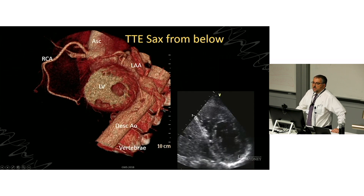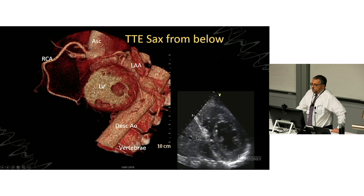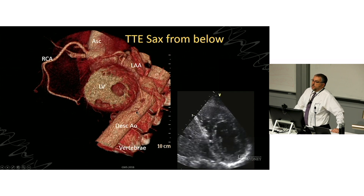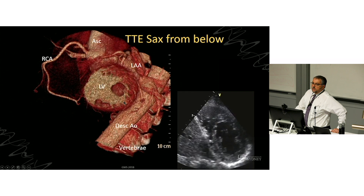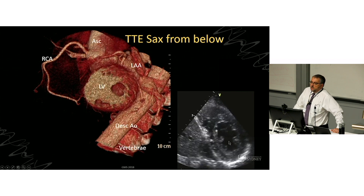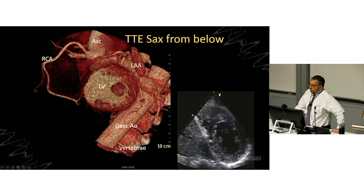Looking at that short axis picture in comparison to the CT scan: the descending aorta is almost completely at right angles to the short axis of the left ventricle and is often tubular below it. You have two papillary muscles — anterolateral and posteromedial, though you can simply call them lateral and medial. All we really need to know is whether we're at the lateral end of the mitral valve — supplied by the circumflex — or the medial end, supplied by the right coronary artery.